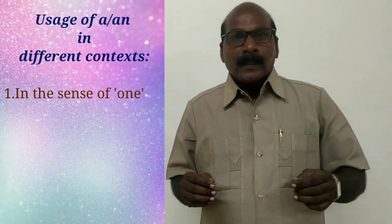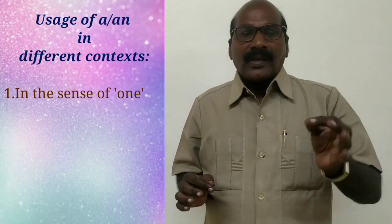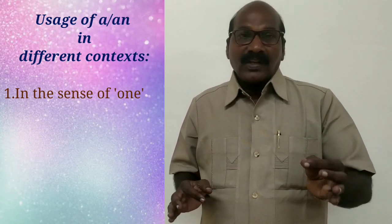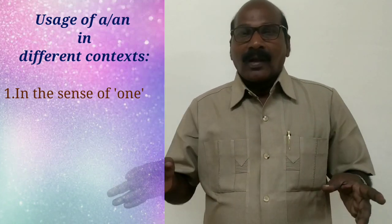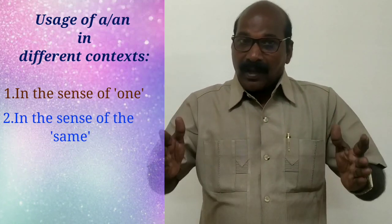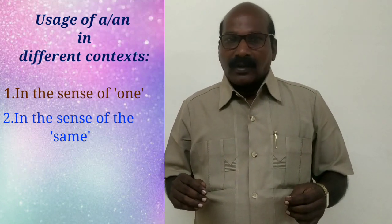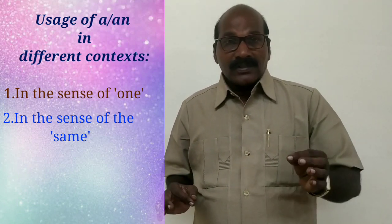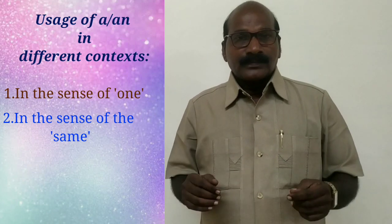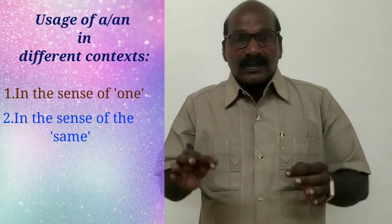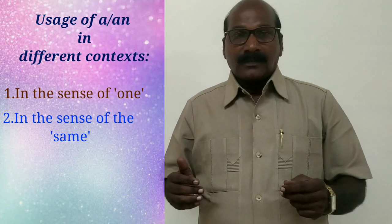For instance, there are three feet in a yard — meaning one yard. In the sense of 'the same' also, we use the indefinite article. For example, 'birds of a feather flock together.' Here, 'a feather' means the same feather.